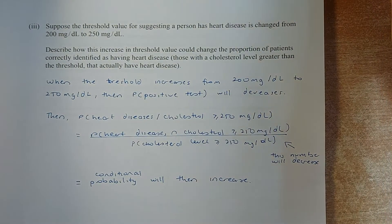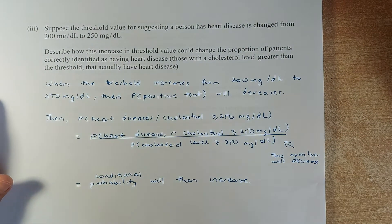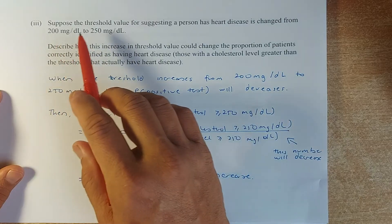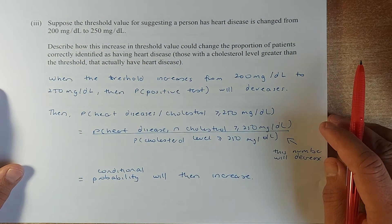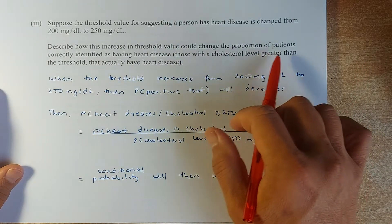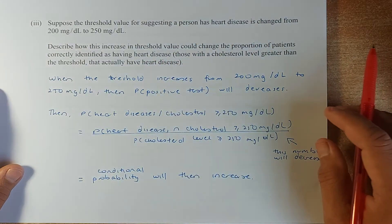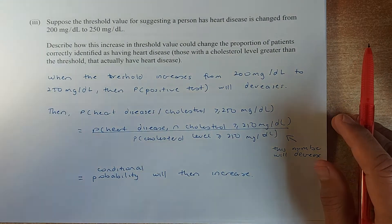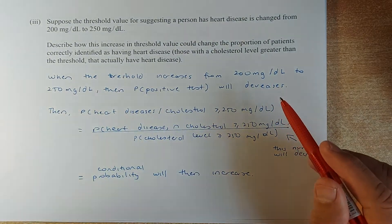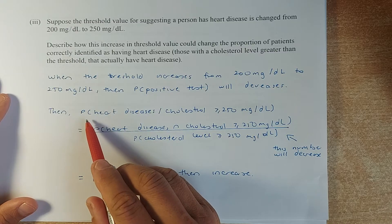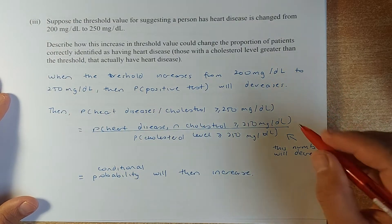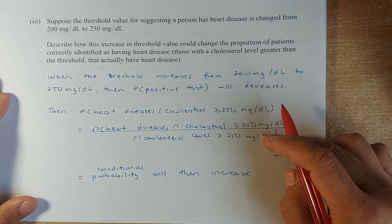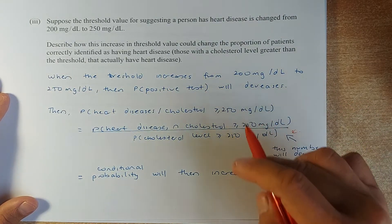Now we shall look at the third question. To get excellence, you must get all three parts correct. The question: suppose the threshold level has increased from 200 to 250 mg — describe how this increase will affect the proportion of people having heart disease. When the threshold increases to 250 mg, the number of people testing positive will decrease. So in the conditional probability formula, the denominator decreases, which means the conditional probability will increase.